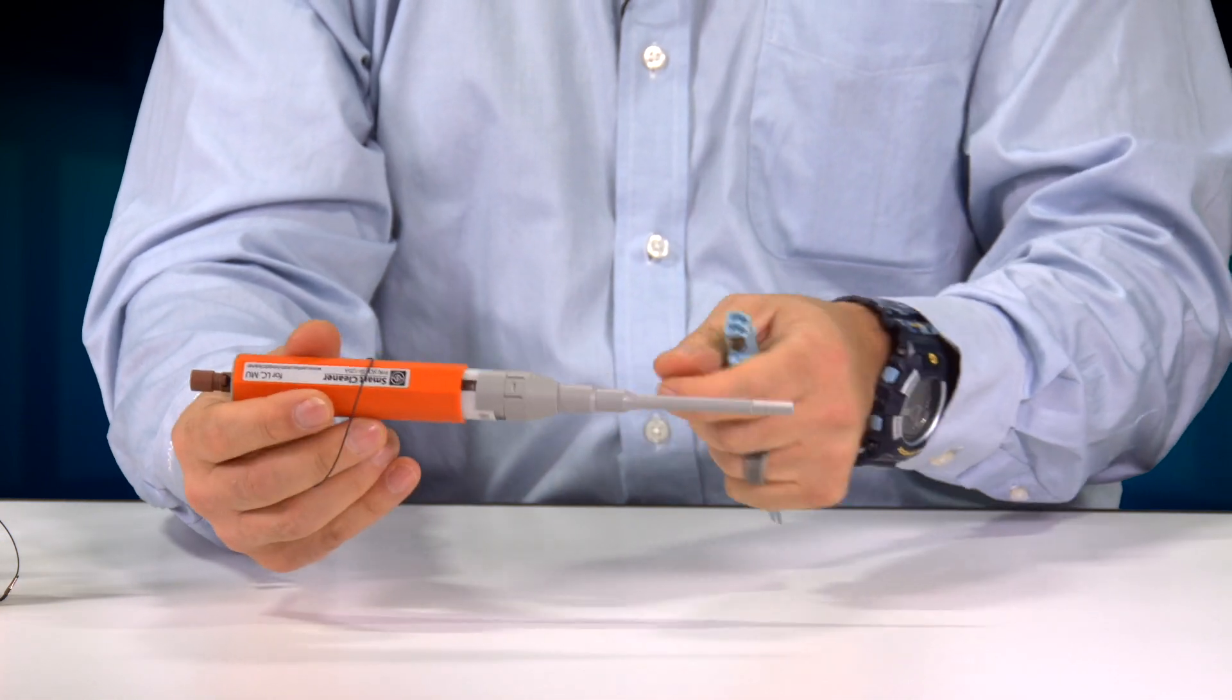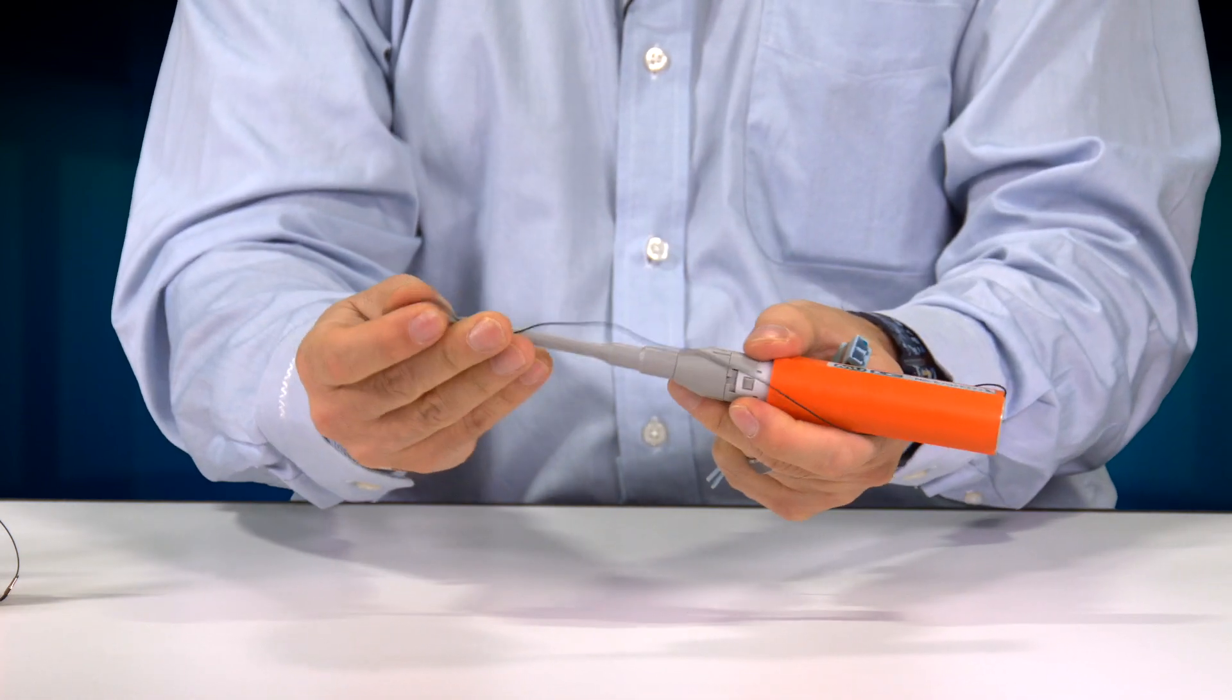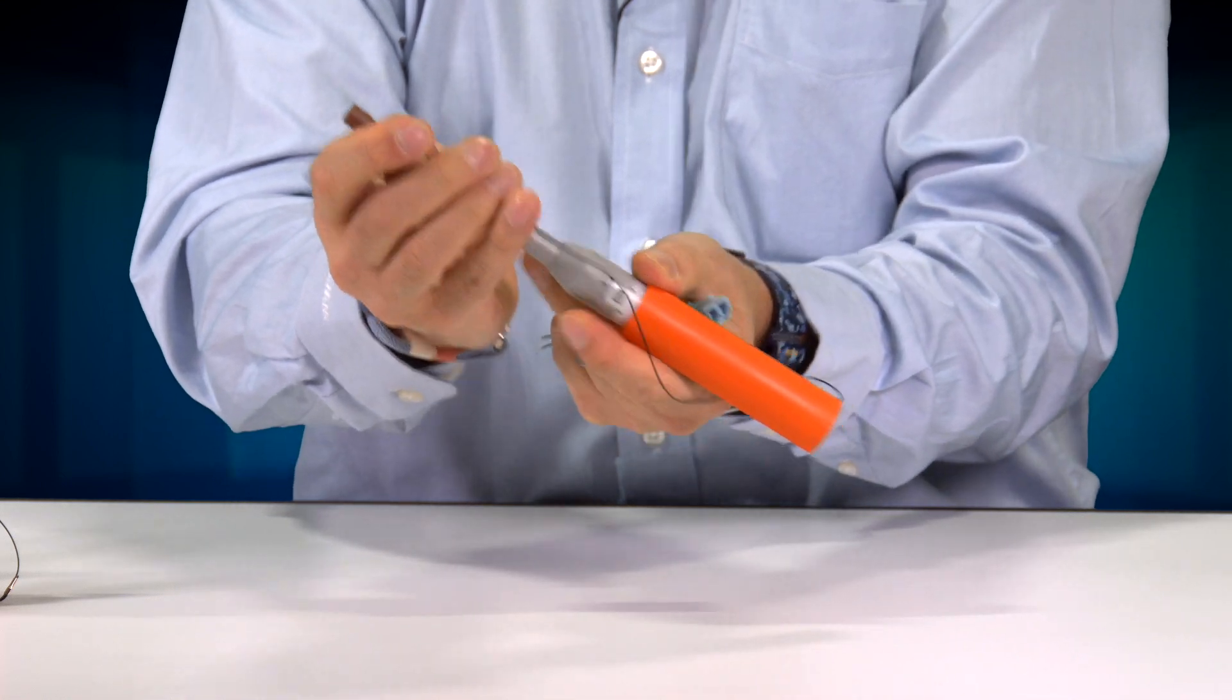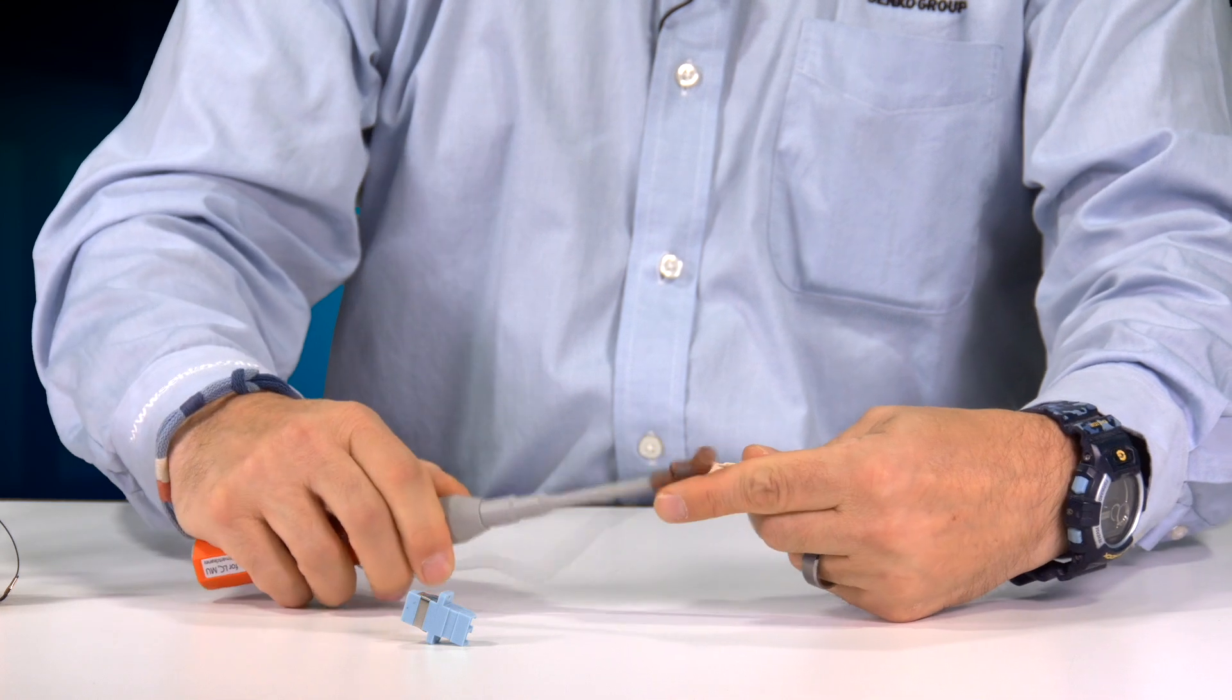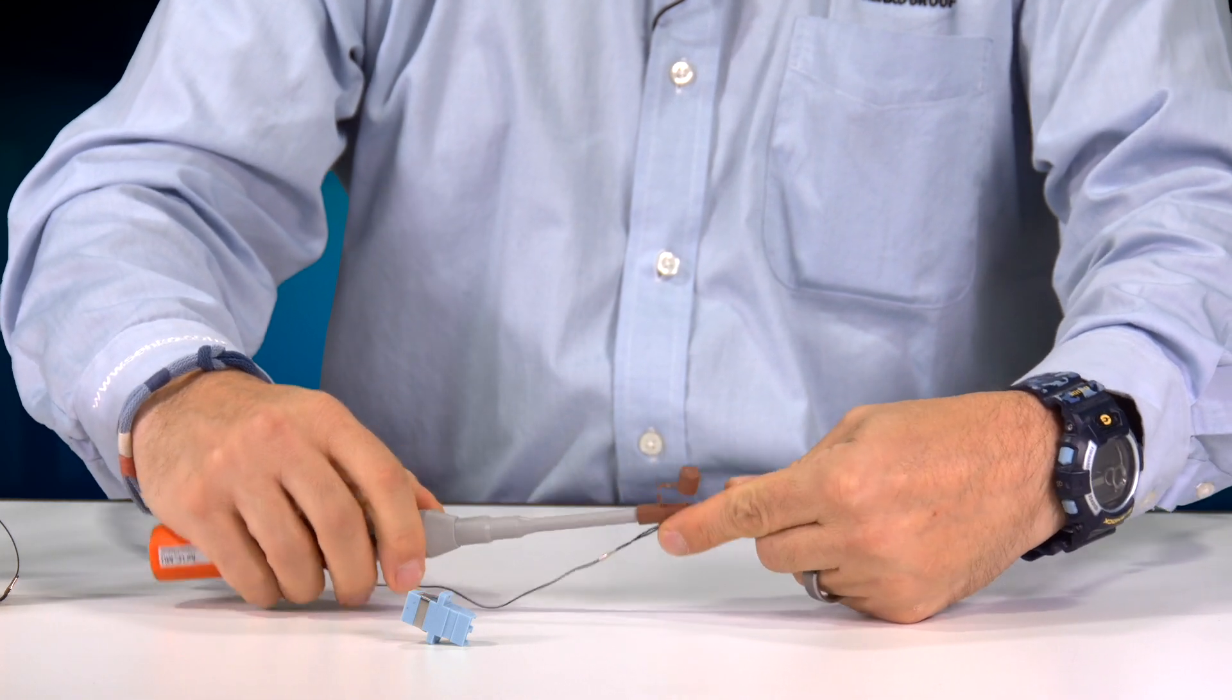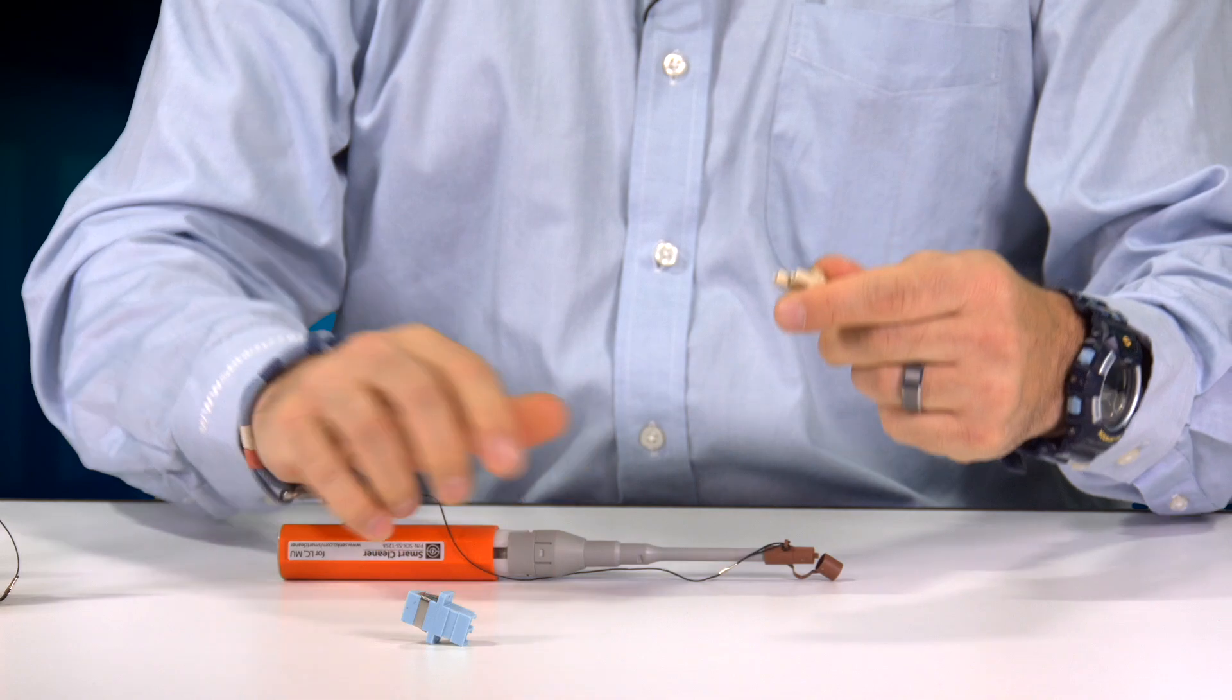To go through and clean the other end of the connector pair, just return the cap, insert the jumper, and give it a push. And now you're done. So remember, when you're working with fiber optic connectors, you always want to clean both ends of the pair so you don't accidentally cross-contaminate.